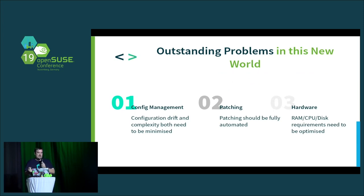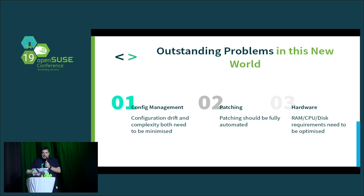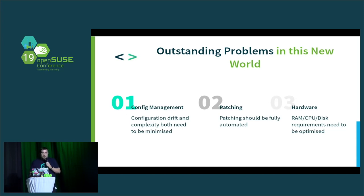To solve the problem of the perfect operating system for this new world — for containers, for single-purpose systems — it needs an answer for configuration management: minimizing the possibility of the OS configuration drifting, and having as little as possible to configure. If there's nothing there to configure, there's less to go wrong. You also need security updates, running the latest version, and as much as possible, that should be totally automated. If it's automated, you don't have to worry about it.